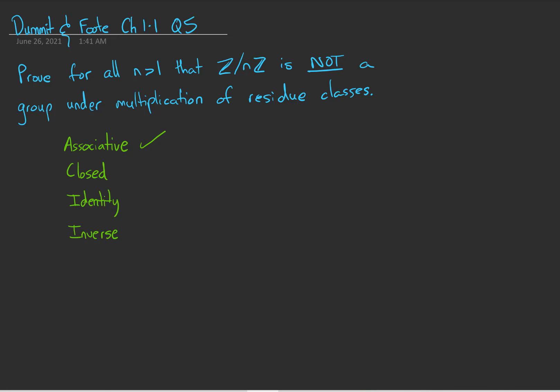And of course it's closed, because congruence class of A times congruence class of B is congruence class of AB. So yes, it is closed.